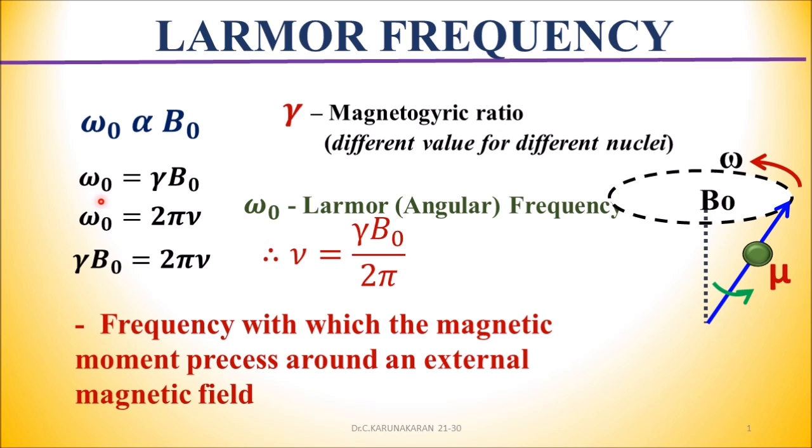Therefore, omega0 equals gamma B0, where gamma is the proportionality constant called gyromagnetic ratio or magnetogyric ratio. It is different for different protons. Omega0 is the Larmor frequency or angular frequency of rotation.